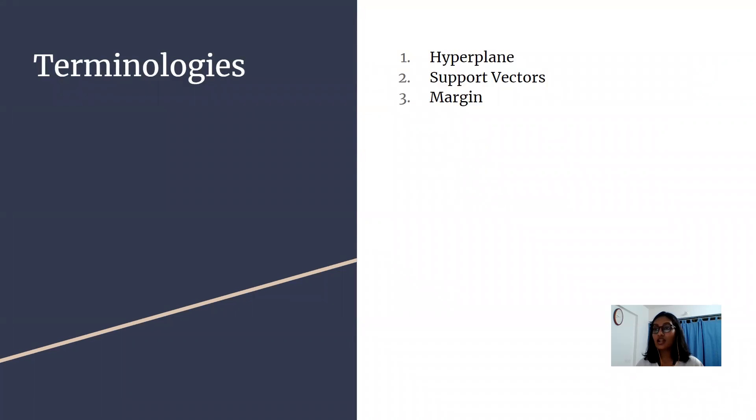The SVM classifier separates data points using a hyperplane with maximum amount of margin. This hyperplane is also known as the maximum margin hyperplane and the linear classifier it defines is known as the maximum margin classifier.